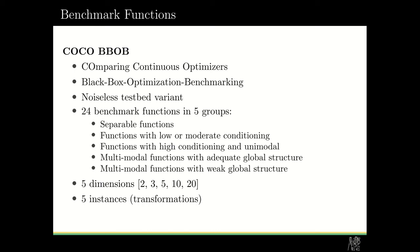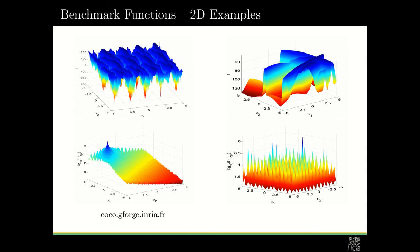And for each function and dimension, we used five different instances, which consist of transformations such as translations or rotations in space. So here we are, we have some visualizations, 2D examples of such functions.